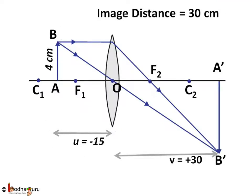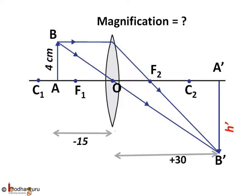The distance is positive means the image formed is on the other side of the optical center. Now look at the ray diagram. We can certainly tell that we get an enlarged image. But how enlarged?